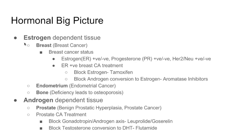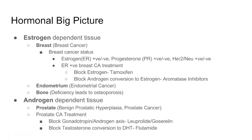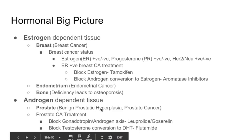There are estrogen-dependent and androgen-dependent tissues. Estrogen-dependent tissues include breast, endometrium, and bone: extra estrogen can cause breast or endometrial cancer, while estrogen deficiency causes osteoporosis. For androgens, the main target pharmacologically is the prostate — extra androgen can cause benign prostatic hyperplasia or prostate cancer.